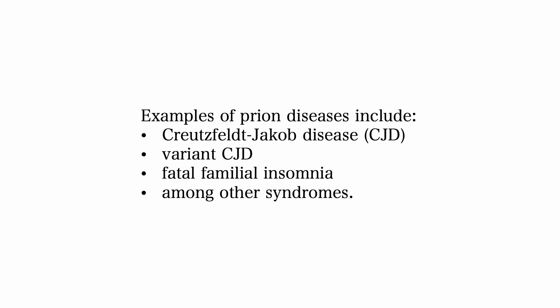Examples of prion diseases include Creutzfeldt-Jakob disease, variants of Creutzfeldt-Jakob disease, fatal familial insomnia, among many other syndromes.